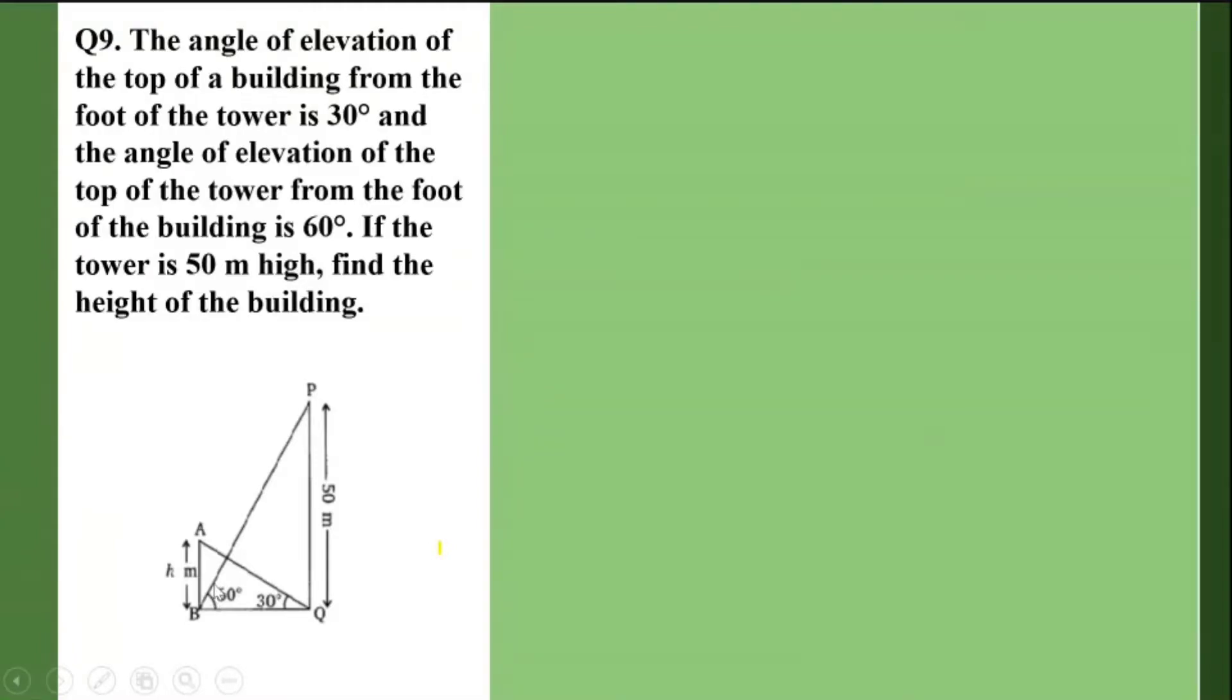From the foot of the tower, the angle of elevation is 30 degrees. So 30 degrees means that this side has to be smaller. So I take PQ to be the tower and I take AB to be the building. From the foot of the tower, the angle of elevation of the top of the building is 30 degrees.